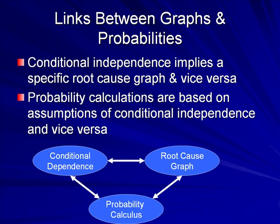Bayesian networks can also represent indirect causal relationships through the concept of conditional independence. Conditional dependencies are identified through examining serial or divergent graphs in a causal model, so that the removal of the condition would sever the directional flow from the cause to the effect.